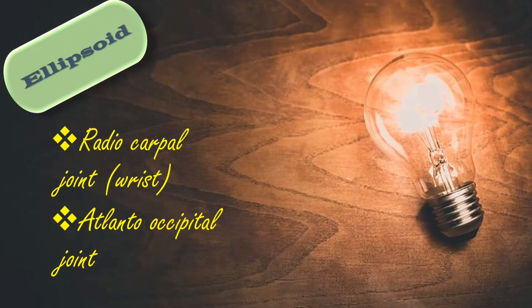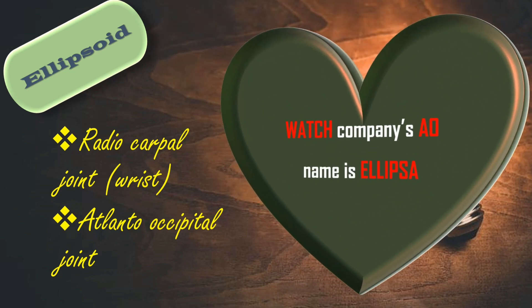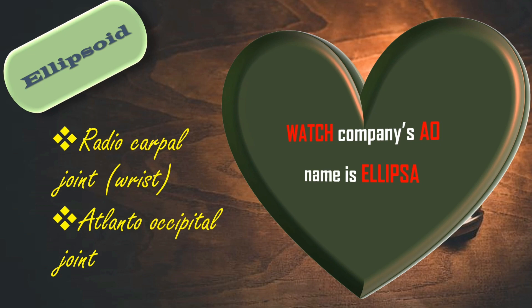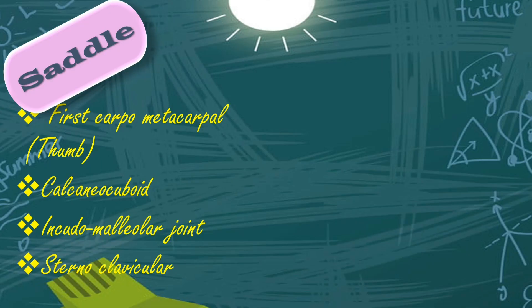Next type of joint is ellipsoid joint. Only two joints are there. The mnemonic here is: watch company's AO's name is ellipsa. Watch is to mention where we wear the watch — wrist only. So wrist is ellipsoid joint. AO means administrative officer — AO is atlanto-occipital joint. Ellipsa is ellipsoid joint. So atlanto-occipital is ellipsoid joint, and atlanto-axial is in pivot joint.